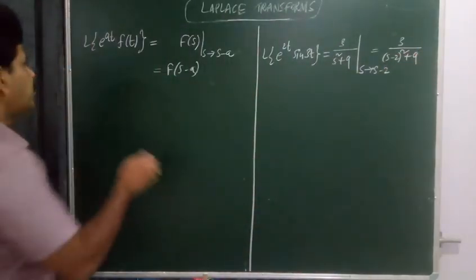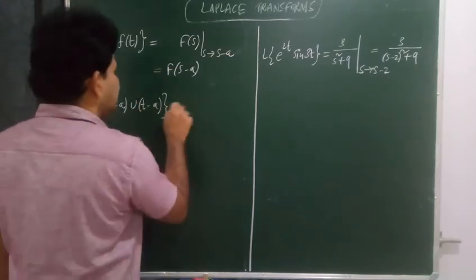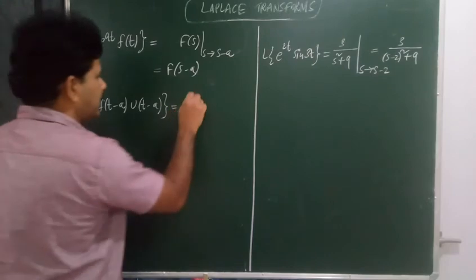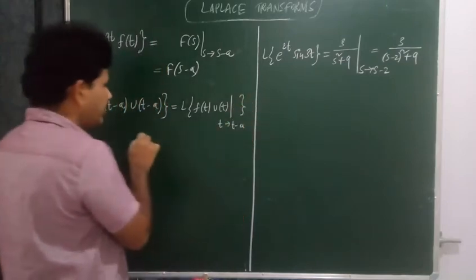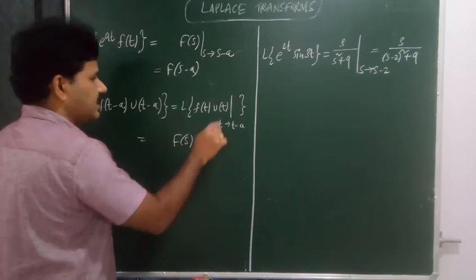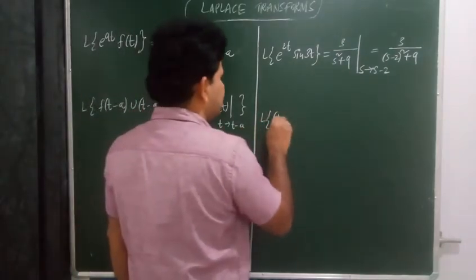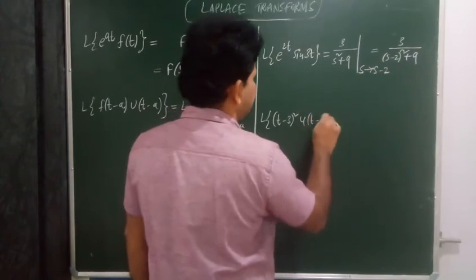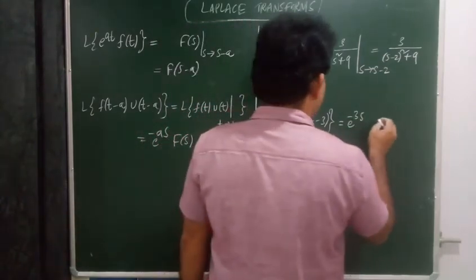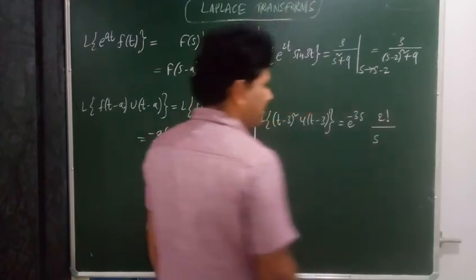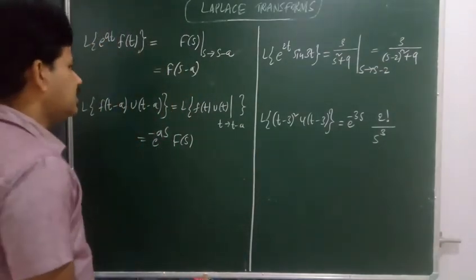Second shifting property: L{f(t−a) · u(t−a)} equals e to the power minus as times F(s). For example, L{(t−3)² · u(t−3)}: this equals e to the power minus 3s times L{t²}, and L{t²} is 2 factorial upon s to the power 3, giving e^(−3s) times 2 over s cubed. That is the second shifting theorem applied.